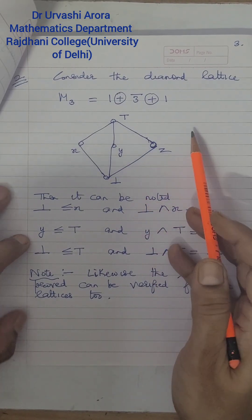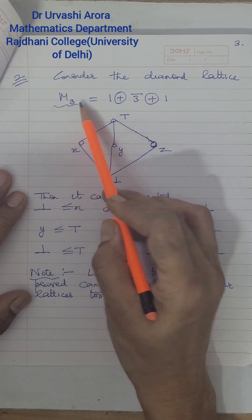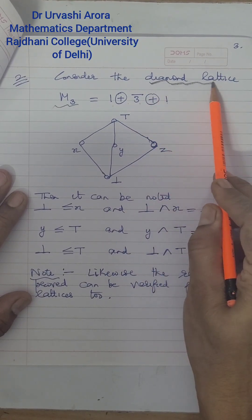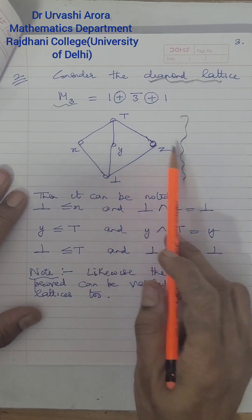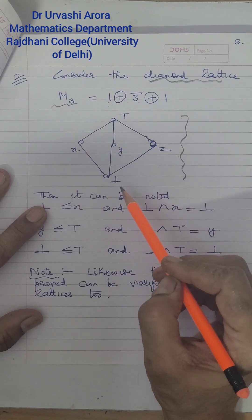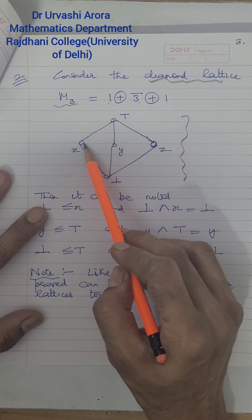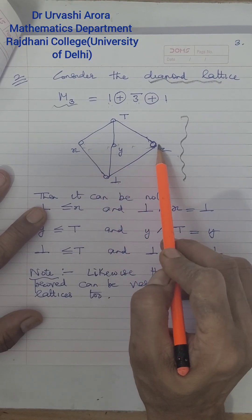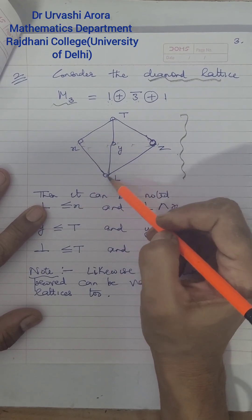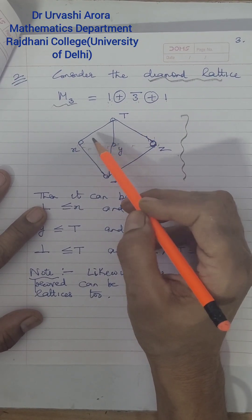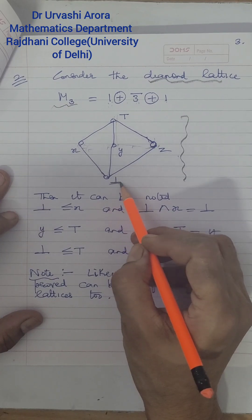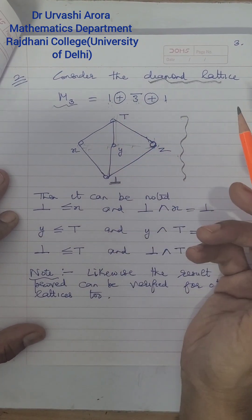Now coming to another example, which is M3. M3 is one-bar linear sum three-bar linear sum one. M3 is also called the diamond lattice because its Hasse diagram looks like a diamond. The bottom element is denoted by the inverted T, then there are three elements in the central anti-chain, and the top element is denoted by capital T. There are three lines connecting the bottom to the three central elements and three lines from those to the top.